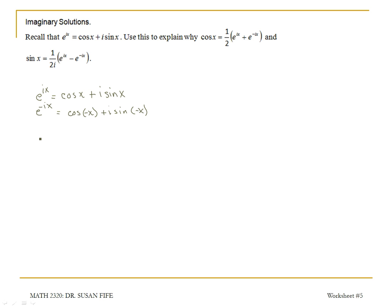I'll be able to simplify this second equation. Because cosine is an even function, cosine of negative x is equal to cosine of x. And because sine is an odd function, sine of negative x is the same as minus sine of x.